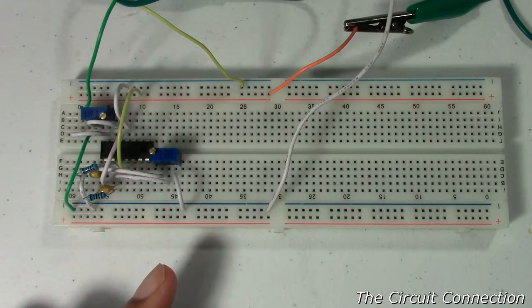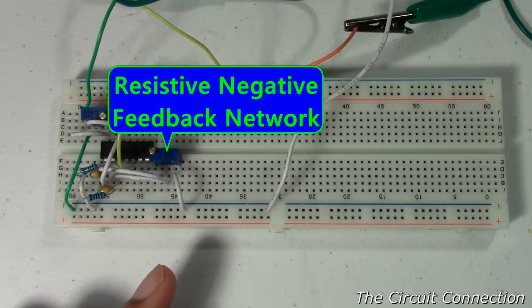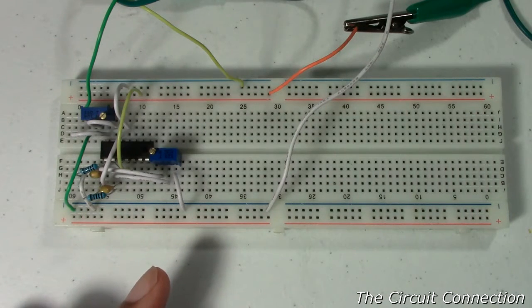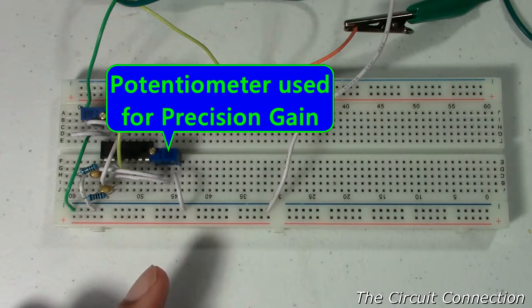In the other path of feedback, it has resistive elements, and in place of that, I'm using a potentiometer so that I can have more precise control over my gain.